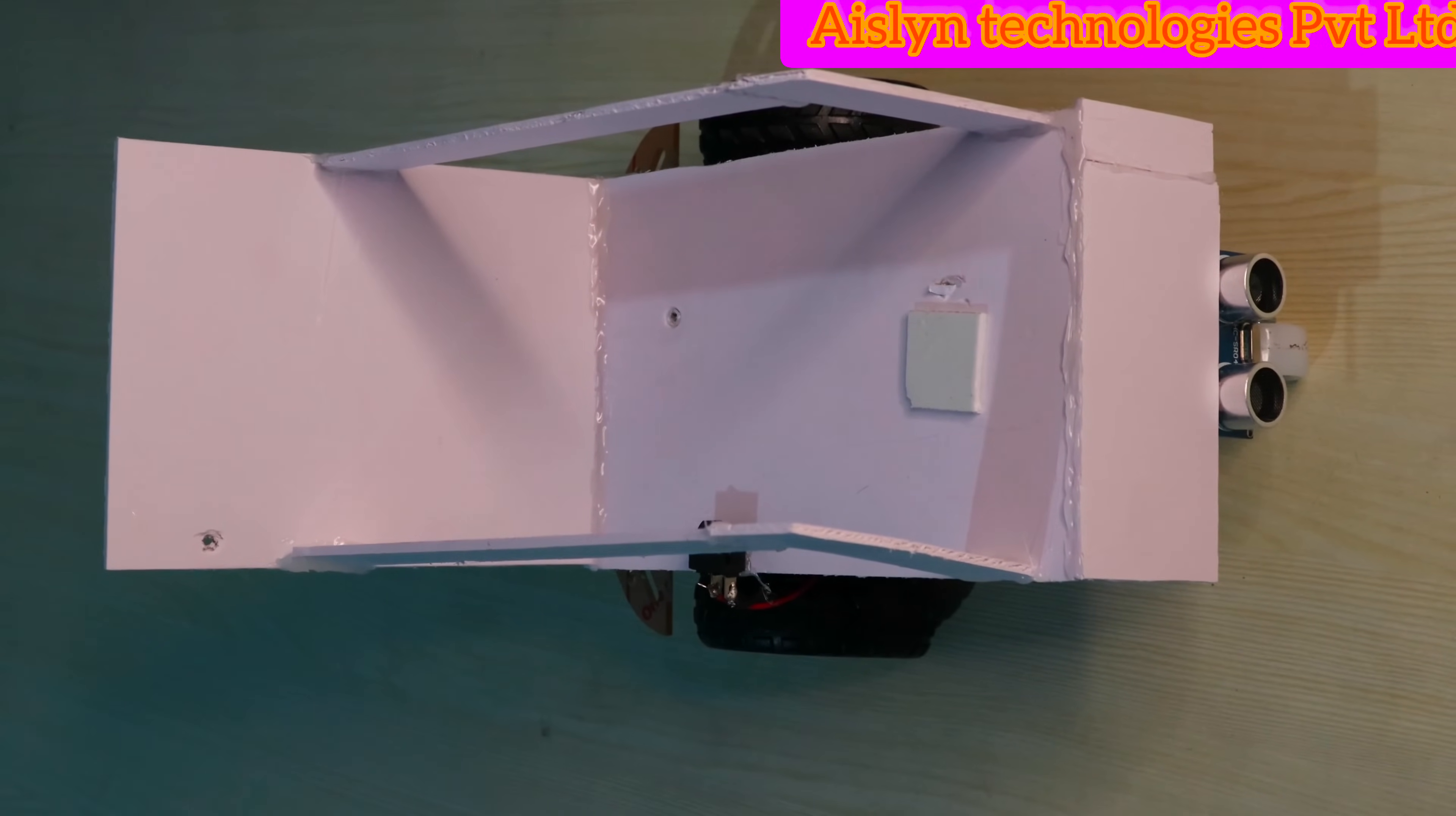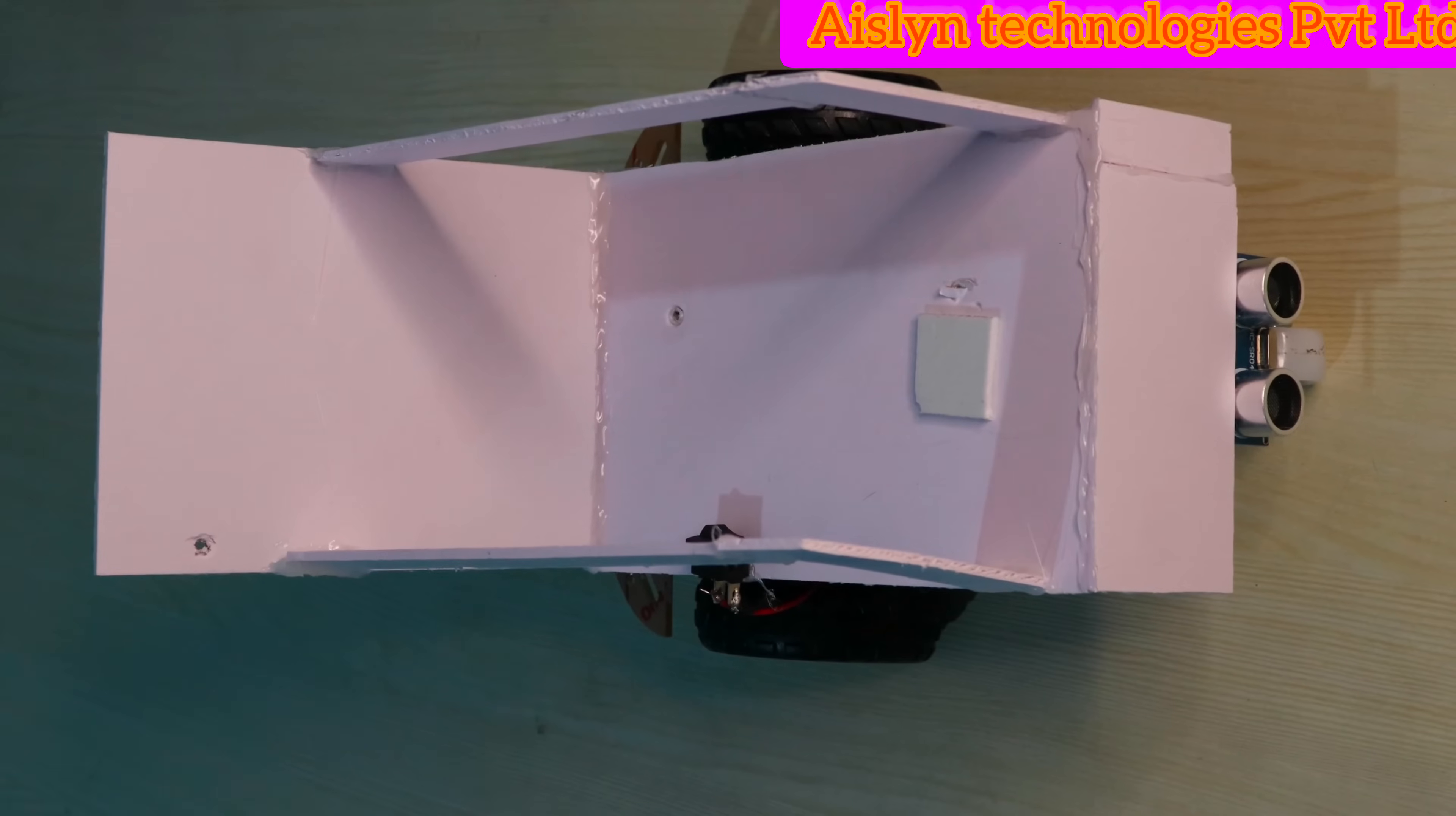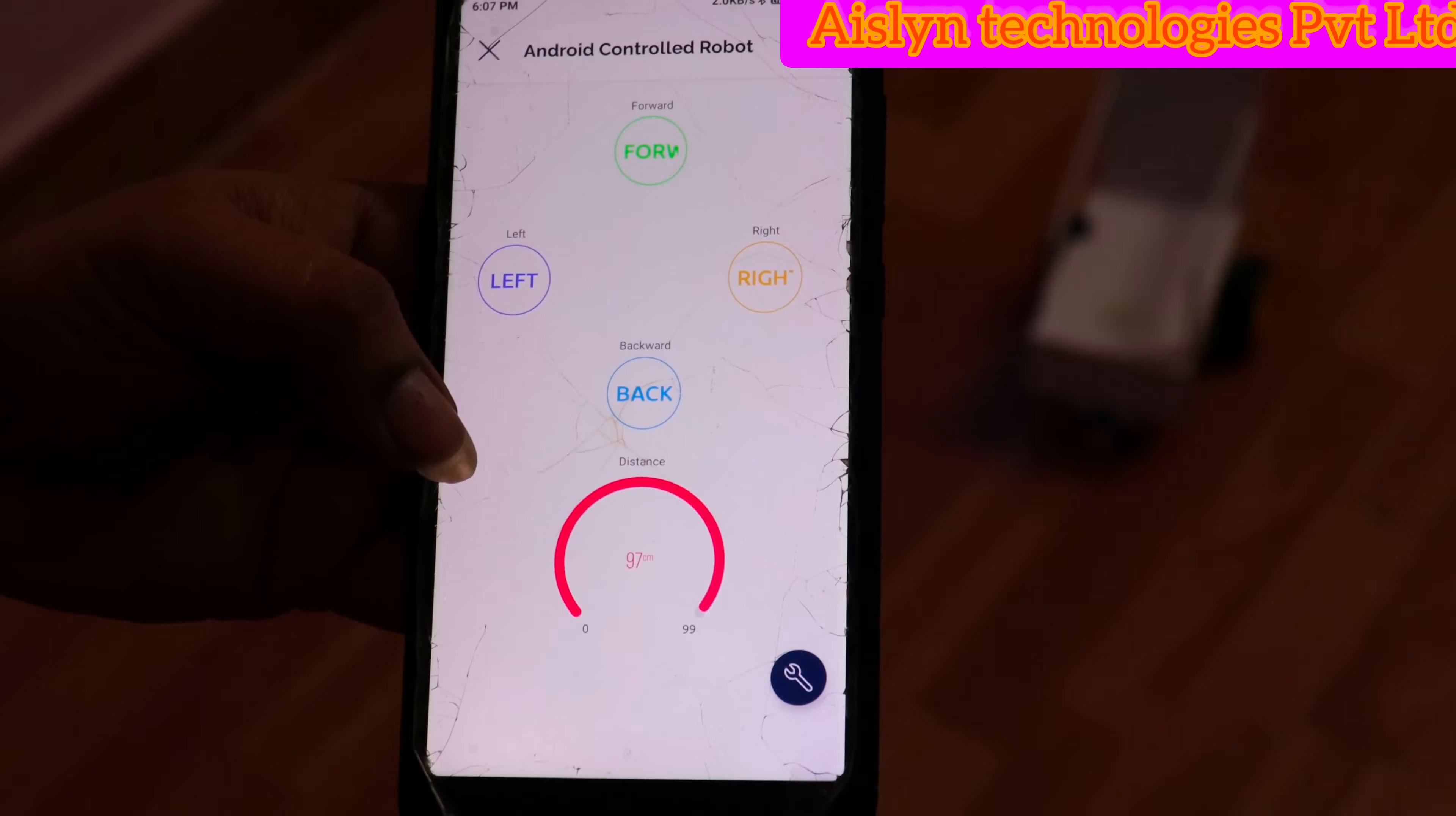In this project, NodeMCU consists of ESP8266 Wi-Fi. This Wi-Fi is interfacing with the Android app. By using Android app only, we can control the wheelchair. This is the Android app. This Android app name is Blink IOT app.